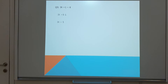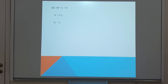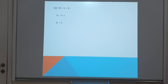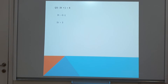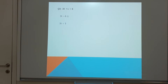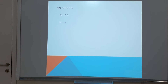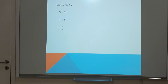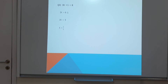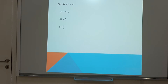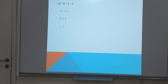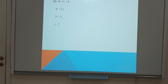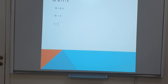Now, 3 times x is less than 5. We bring 3 to the right-hand side by dividing. So x is less than 5 divided by 3, which is 5 over 3. So the value of x is less than 5 over 3.